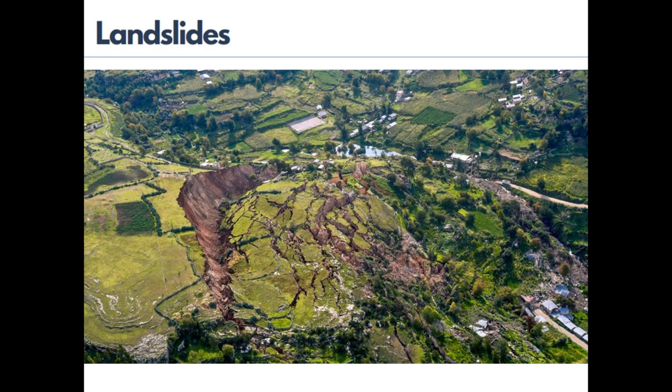Next comes landslide. A mass of land falling down a slope is called a landslide.